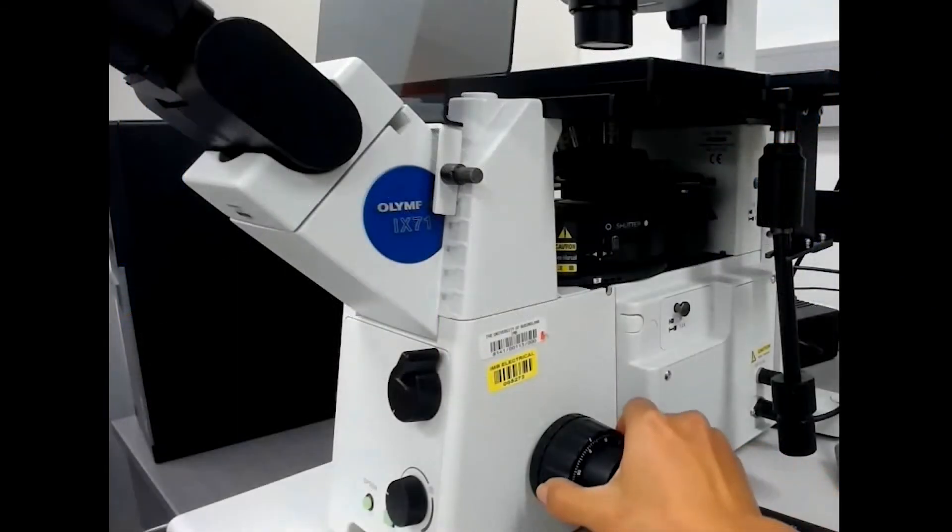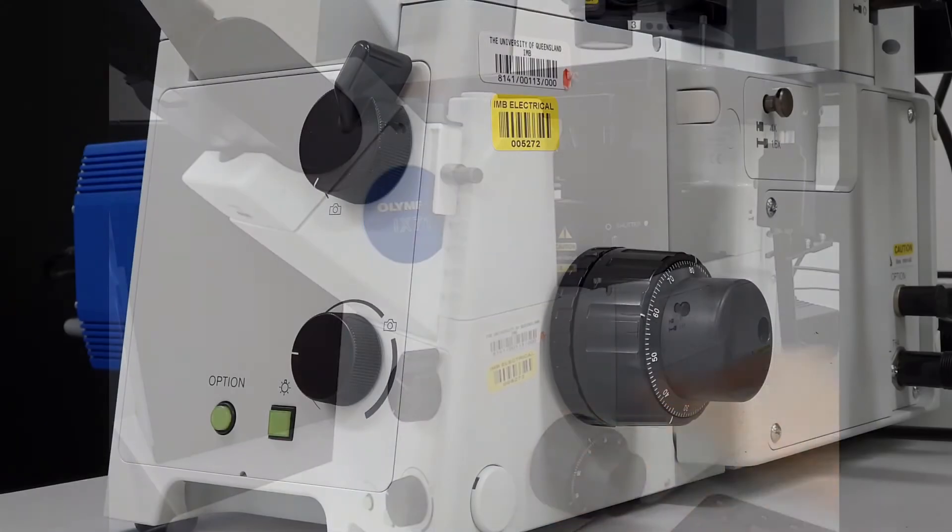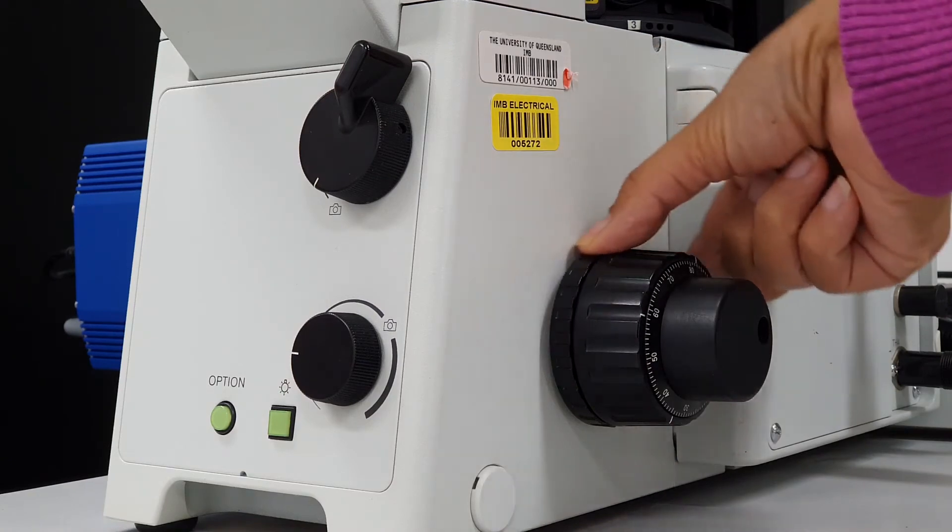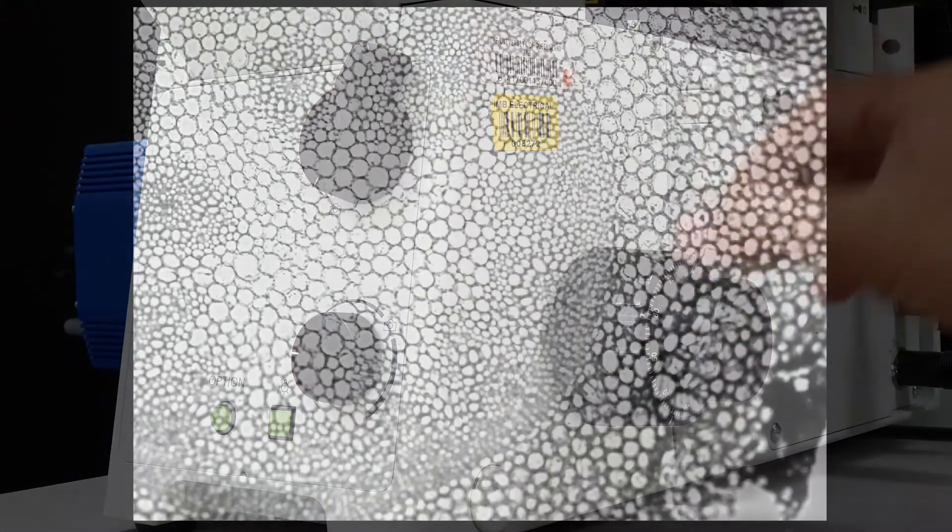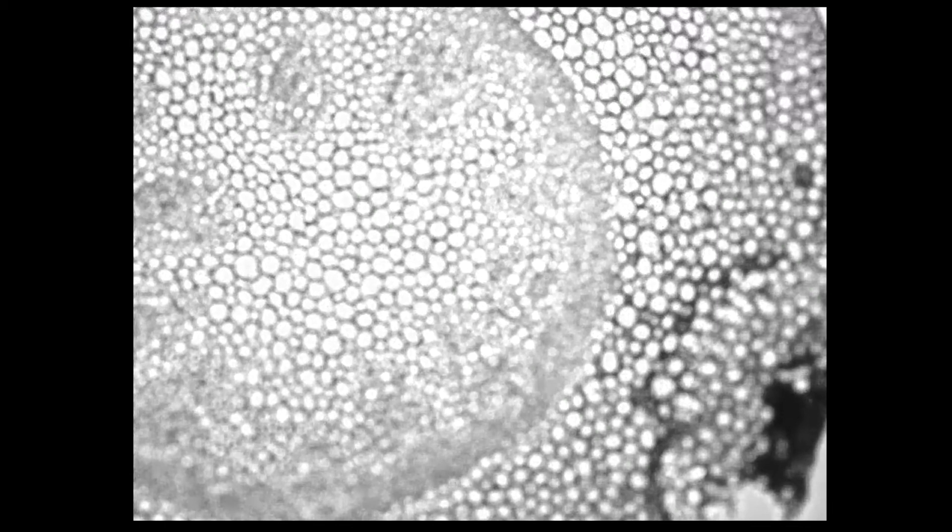If the focus wheel is hard to turn, you may need to loosen the innermost ring on the focus knob. However, if you loosen it too much, the objective may slip and lose focus unexpectedly.